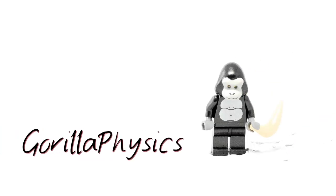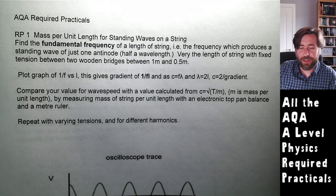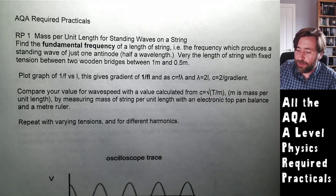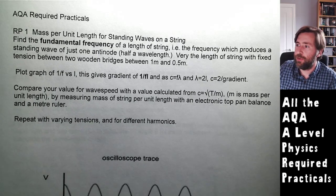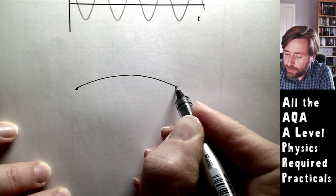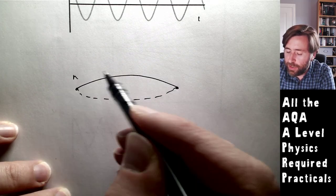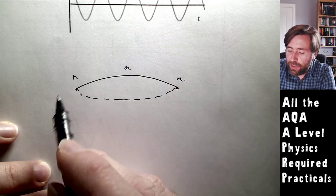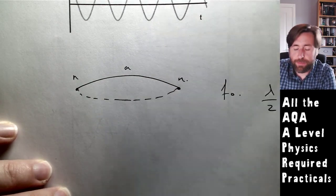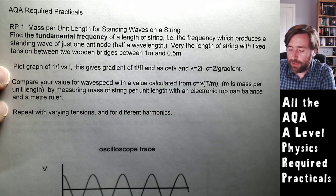The first practical is mass per unit length of a standing wave - finding the fundamental frequency of a length of string. The fundamental frequency produces a standing wave of just one antinode: a node at each end, one antinode in the middle. That is f-naught, and that length is also half a wavelength. You produce one of those with a vibration generator and a signal generator, using the signal generator attached to an oscilloscope to measure the frequency accurately.